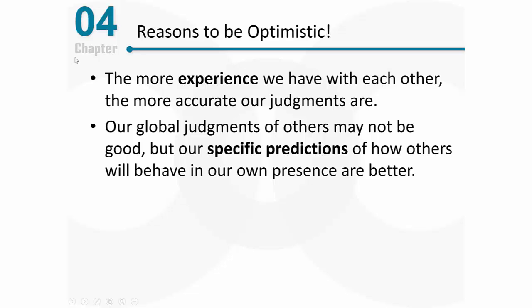Our global judgments of others — thinking about how others behave across a variety of situations — are really not very good, but our specific predictions of how other people will behave in our presence tend to be better. That makes sense because what goes on with another person right in front of us really affects us, so we probably pay more attention and are simply more motivated to be correct.